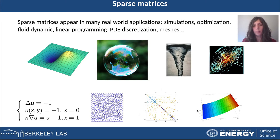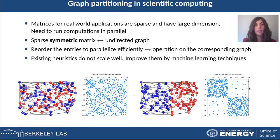Thanks to this matrix it is possible to find the solution of the system. This is just an example of how sparse matrices appear in PDE discretization. Sparse matrices coming from real-world applications often have a huge dimension, so it is very important that the computations on them are extremely optimized.